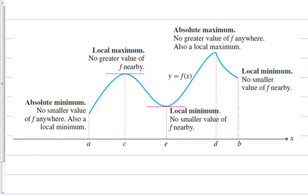Here's a picture explaining the difference between absolute and local. Remember, absolute uses the word 'global,' and local sometimes uses the word 'relative.' Think of it this way: local means nearby, while global means the whole thing. Absolute means totally — the whole thing — while relative doesn't mean everything, just nearby.